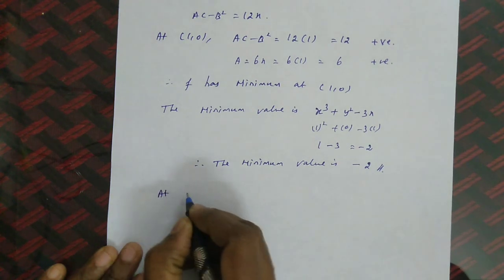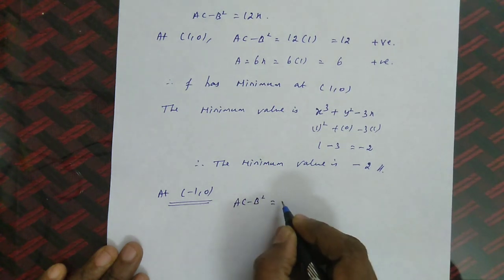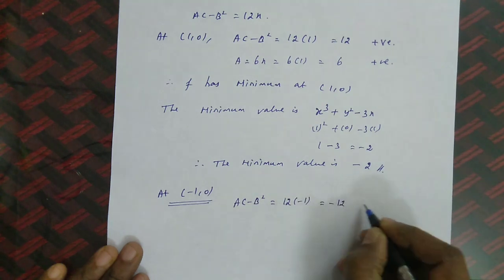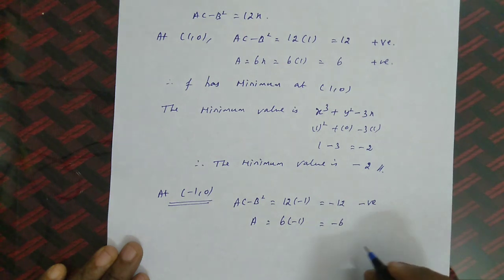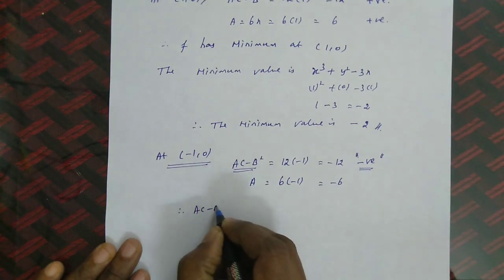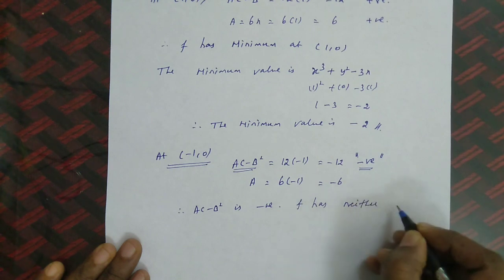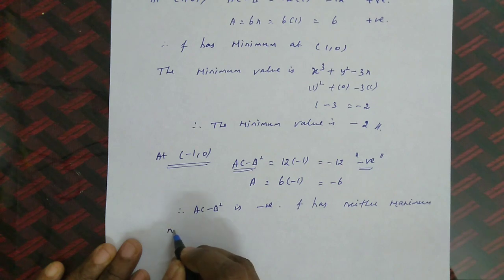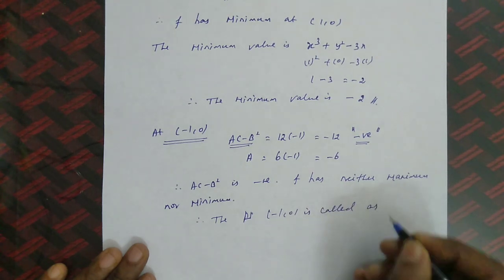At the second stationary point (−1, 0): AC − B² = 12 × (−1) = −12, which is negative. A = 6 × (−1) = −6. Since AC − B² is negative, f has neither maximum nor minimum at this point. Therefore, the point (−1, 0) is called a saddle point.